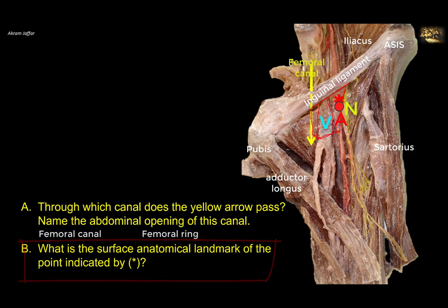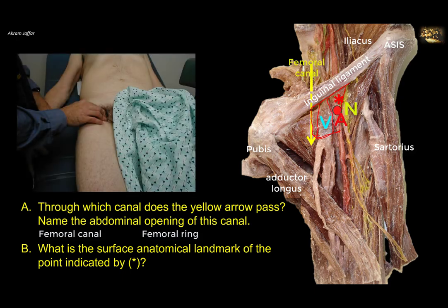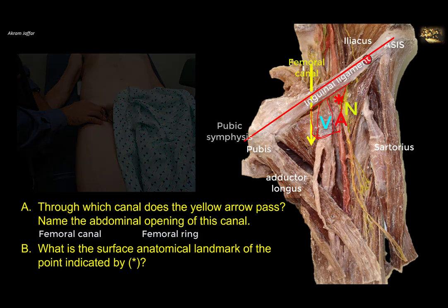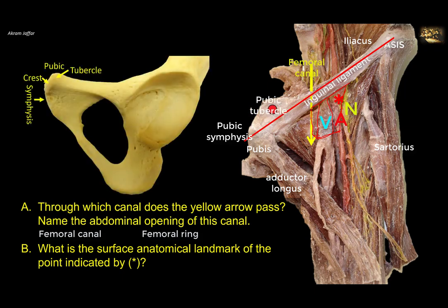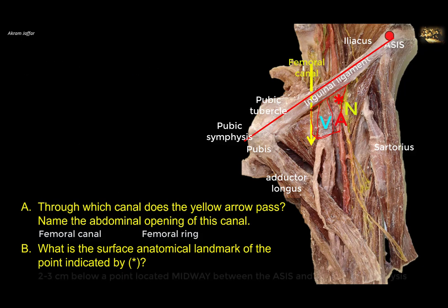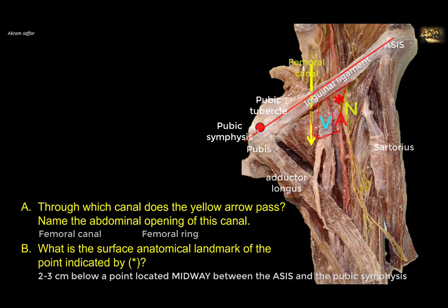This point indicates the femoral artery, which can be palpated two to three centimeters below a point located midway between the anterior superior iliac spine and the pubic symphysis. Please note that the inguinal ligament — the lower free border of the aponeurosis of the external oblique muscle — extends between the anterior superior iliac spine and the pubic tubercle, not the pubic symphysis. Between the pubic tubercle and the pubic symphysis there is the pubic crest. So the point where the artery passes beneath the inguinal ligament is not the midpoint of the inguinal ligament, but the midpoint of the inguinal region between the anterior superior iliac spine and the pubic symphysis.